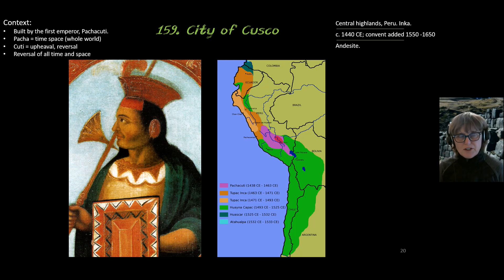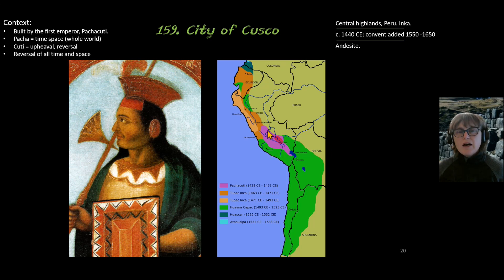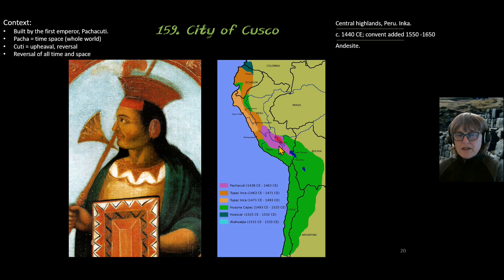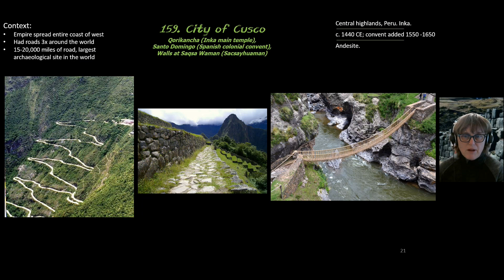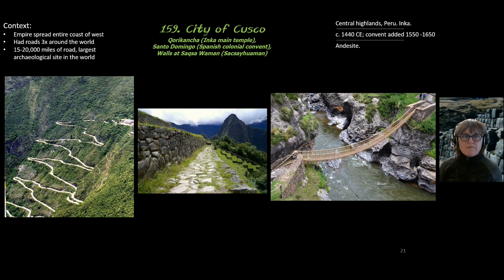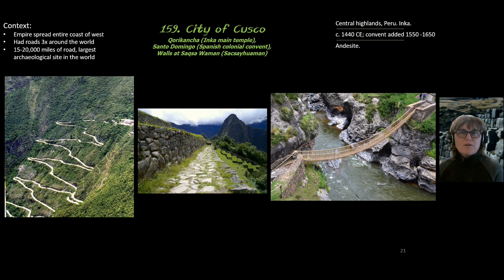He reversed all of time and space, he felt, in that he took from the city of Cusco — conquering that got him all this area in purple — and he started, essentially, the Peruvian Inca Empire. More context that applies to all is that this empire is located in the highland area of the Andes Mountains. It spread along the entire coast of South America, between 2,500 to 3,000 miles.